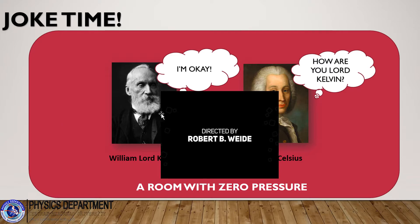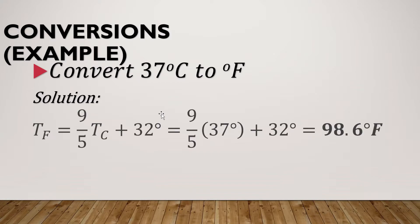So let's go back to our discussion. Let's have examples on conversions of temperature scale. For example, convert 37 degrees Celsius to degrees Fahrenheit. This is very simple, just use the conversion equation from Celsius to Fahrenheit: T_F = 9/5 times the temperature in Celsius plus 32 degrees. You will get 98.6 degrees Fahrenheit. So 37 degrees Celsius is equal to 98.6 degrees Fahrenheit.